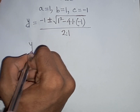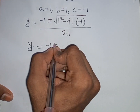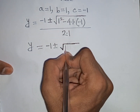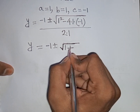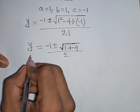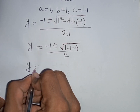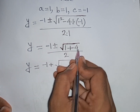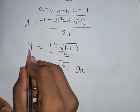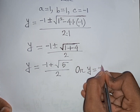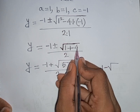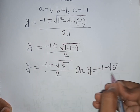Simplifying inside the square root: 1 - (-4) = 1 + 4 = 5. So the two cases are y = (-1 + √5) / 2 and y = (-1 - √5) / 2.